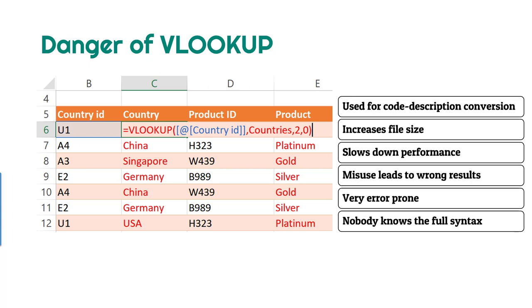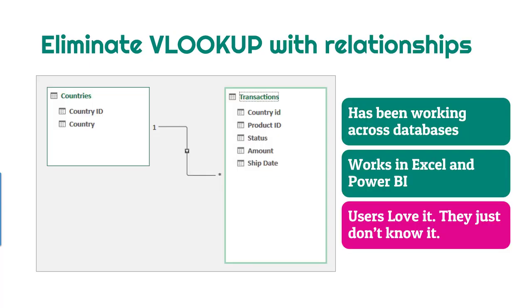Another dangerous thing is VLOOKUP. Very often transactional data has codes and people need to convert those codes into descriptions using VLOOKUP. It's a very commonly used function, but unfortunately it increases file size, slows down performance, and many people do not know the exact syntax and its pitfalls. So very often they get results which are absolutely wrong and nobody notices them — it's a very dangerous function. To eliminate that, we use Power Pivot, which has been there since Excel 2010. All you have to do is get the transactional data as well as the master data, and just do a simple drag-and-drop to create a relationship, which eliminates the need for VLOOKUP, improves performance, and gives you the best of both worlds. Users just don't know about it — just teach it to them.